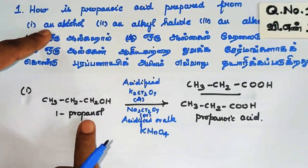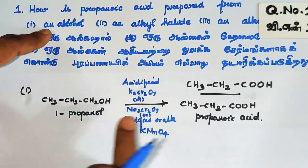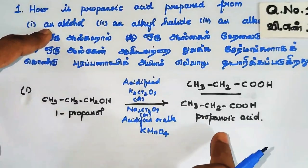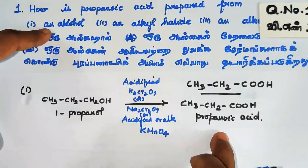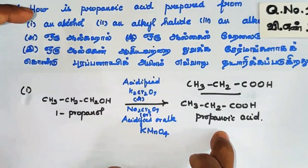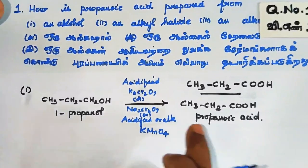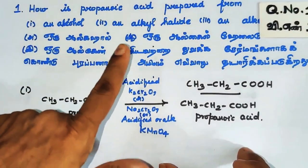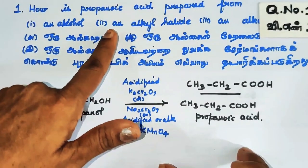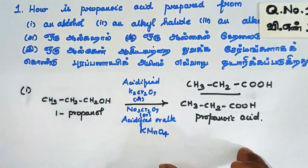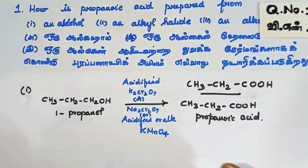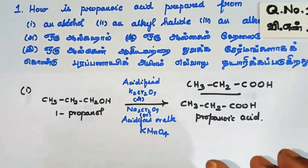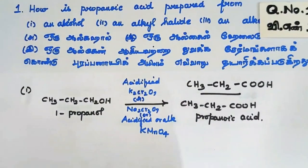Propanoic acid is obtained by oxidation. So this is the first method — converting alcohol to propanoic acid using an oxidizing agent.